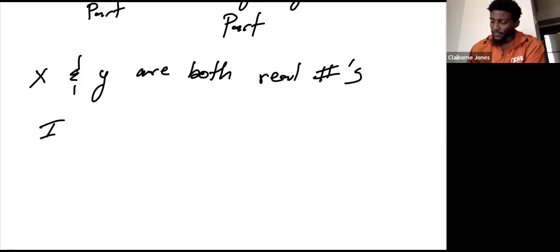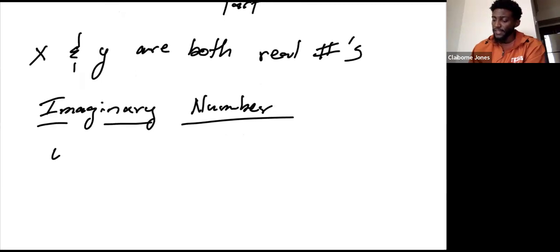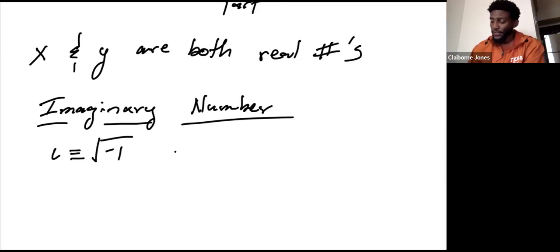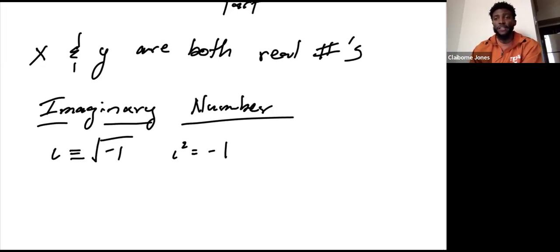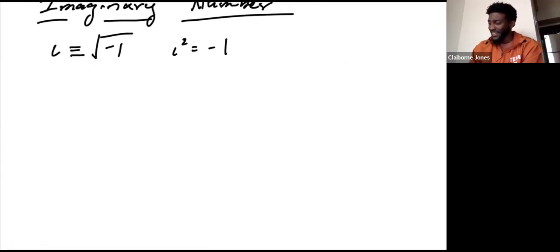The imaginary number, however — this is what I was discussing earlier with the book — it's given the variable J in the book, but here I'm going to say it's I. I is the square root of minus one. Or another way of saying this: I squared is equal to minus one. Hopefully that's clear. If there are any questions about that, please feel free to ask — maybe a mathematician can get back to you.